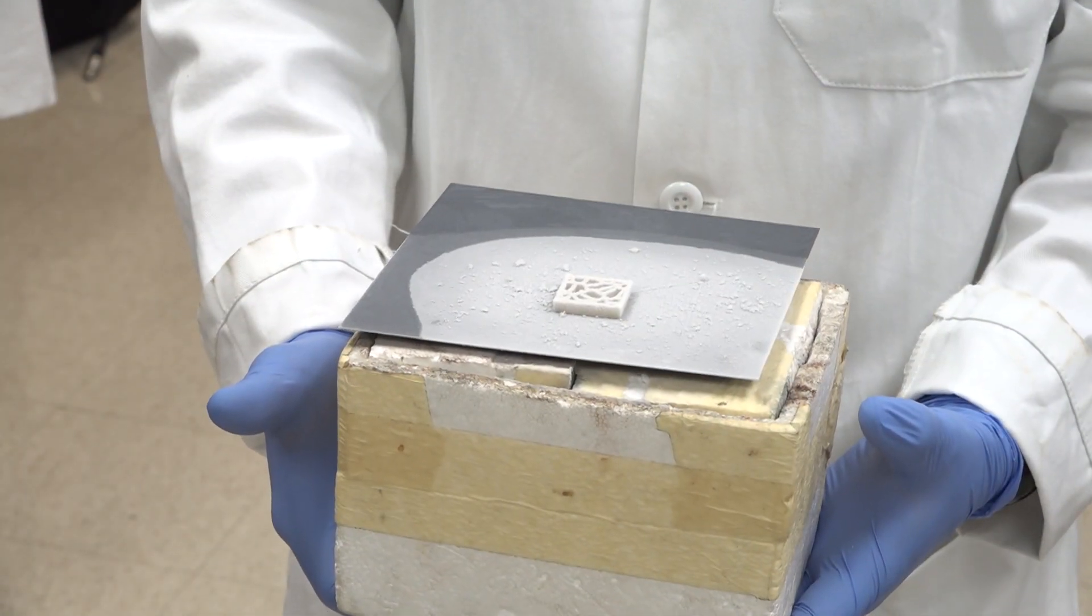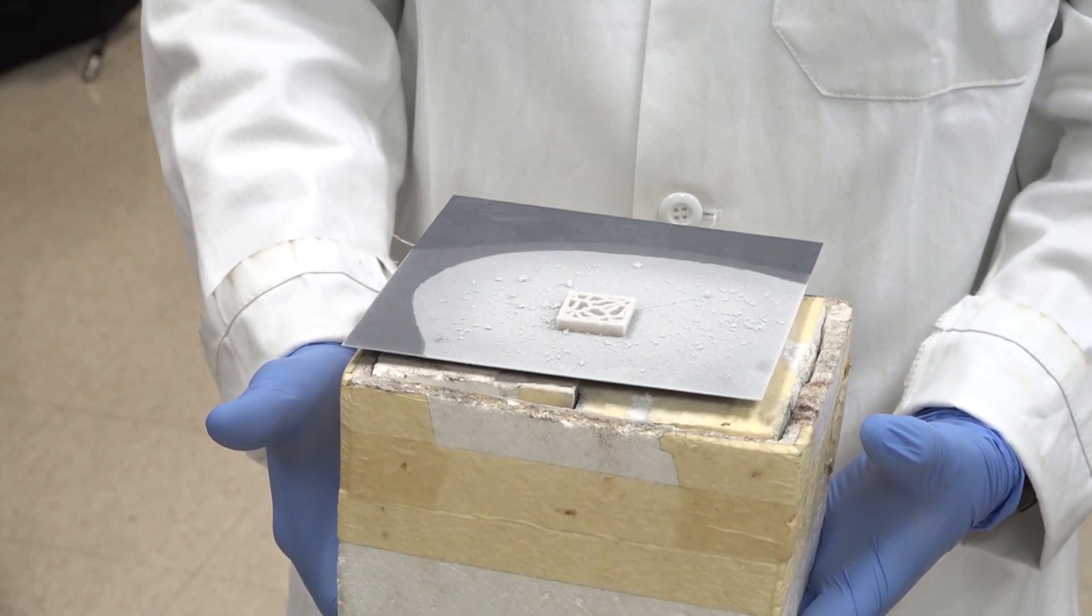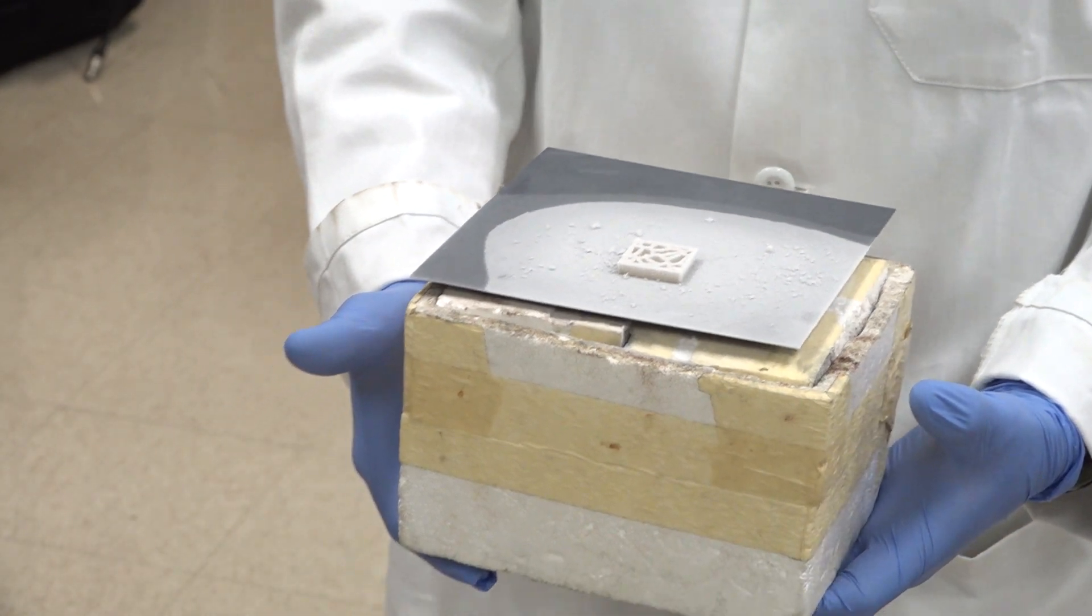And once we have the 3D printed ice structure, we move it into a freeze dryer. So the freeze dryer works under low temperature, low vacuum. So under this condition, we can remove ice.